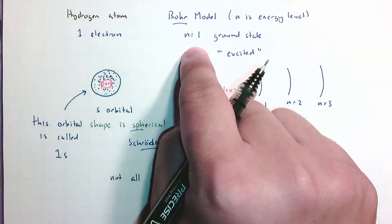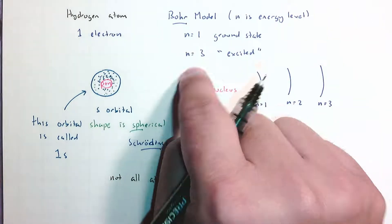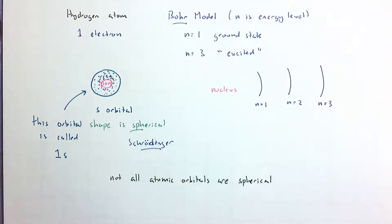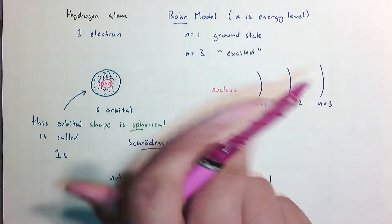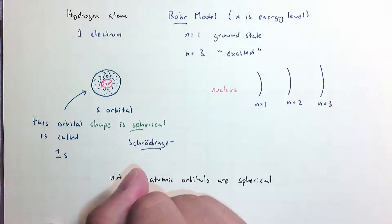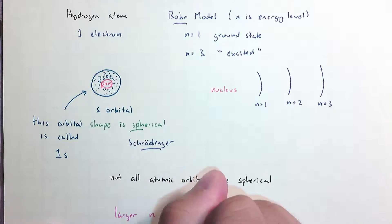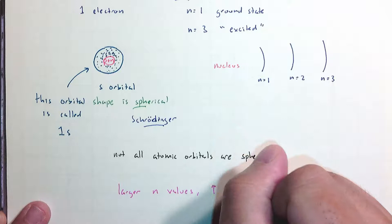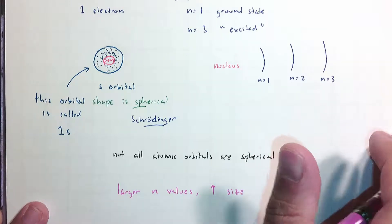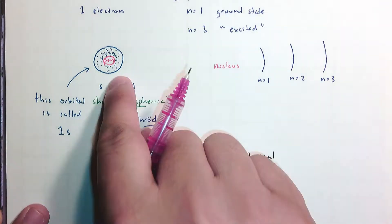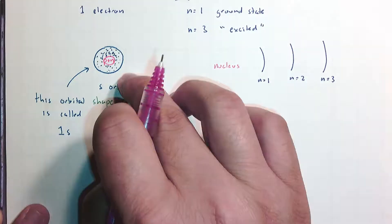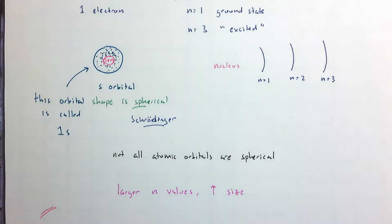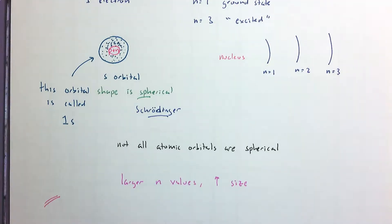Does n equals 2 have an s orbital? Yes. Does n equals 3 have an s orbital? Yes. As we get to larger n values, you increase the size — so the 2s is a sphere but bigger, and the 3s is a sphere but even bigger. Now let us look at the radial probability density, and I have a figure for this because there's a peculiarity that comes out of the Schrödinger equation.